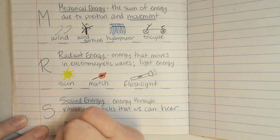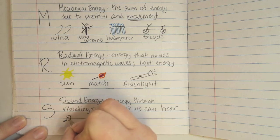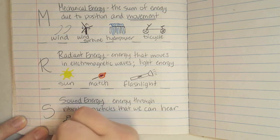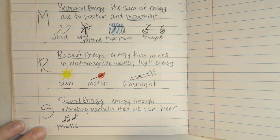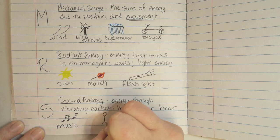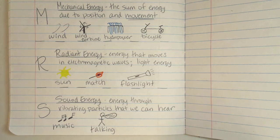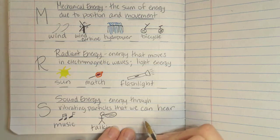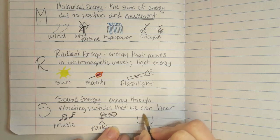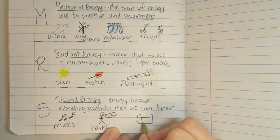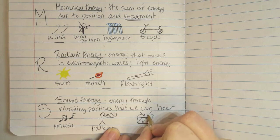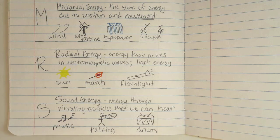So, energy through vibrating particles that we can hear. And that's sound energy. Some examples would be music. We've got some music notes here. We can use talking. If you're talking or making noise, sound is coming out of your mouth. So, we'll draw a little person here and a little sound bubble. So, talking. And then, if you're in band, if you think about any of the instruments that you play, those are producing a sound. I'm going to draw a drum. There's my drum. So, that's all for our first three types. Mechanical, radiant, and sound.